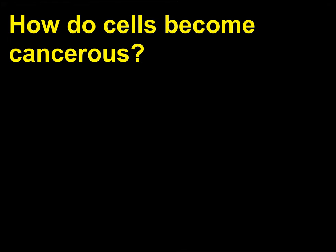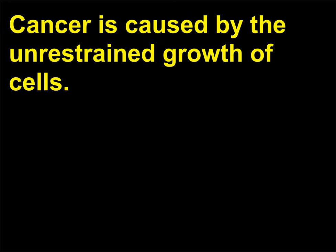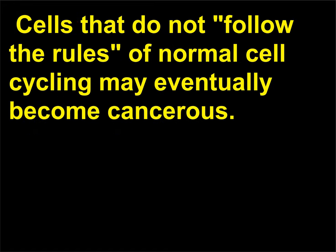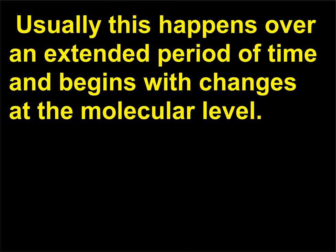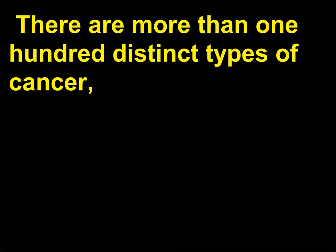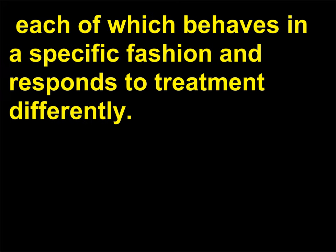How do cells become cancerous? Cancer is caused by the unrestrained growth of cells. Cells that do not follow the rules of normal cell cycling may eventually become cancerous — meaning that the cells reproduce more often than normal, creating tumors. This happens over an extended period of time and begins with changes at the molecular level. There are more than 100 distinct types of cancer, each of which behaves in a specific fashion and responds to treatment differently.